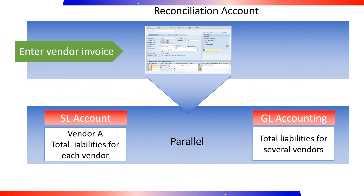When you create a vendor master record, you need a unique number for the vendor or creditor. This number is assigned either automatically by the system or manually by the administrator, depending on the account group. The creditor number is also used as a subsidiary ledger number in financial accounting, where the total liabilities are updated for each vendor in subledger accounting. When creating a vendor master record, you must also create a reconciliation account, which is a general ledger account in GL accounting. A reconciliation account depicts a company's liabilities to numerous vendors in GL accounting. When entering invoices, you enter the vendor and the system produces the reconciliation account from the vendor master record.